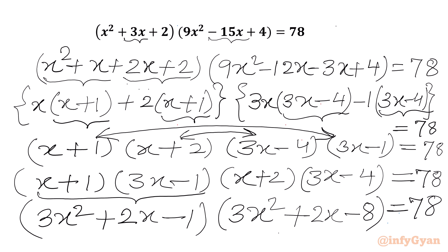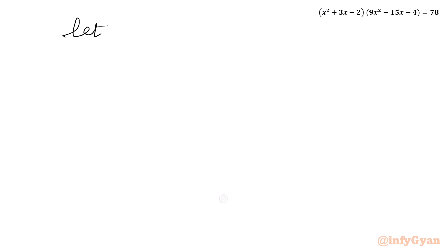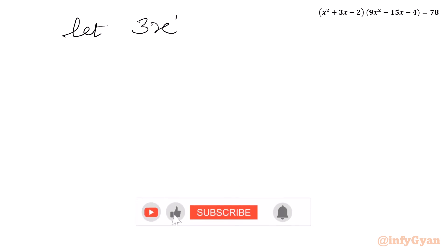We can see that both products contain 3x² + 2x. Let us say a = 3x² + 2x. Then our equation becomes (a - 1)(a - 8) = 78.